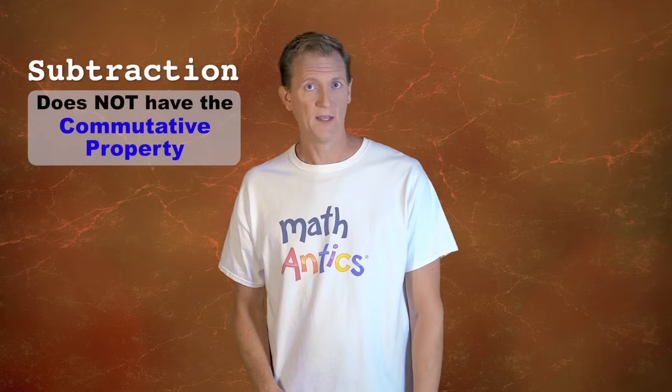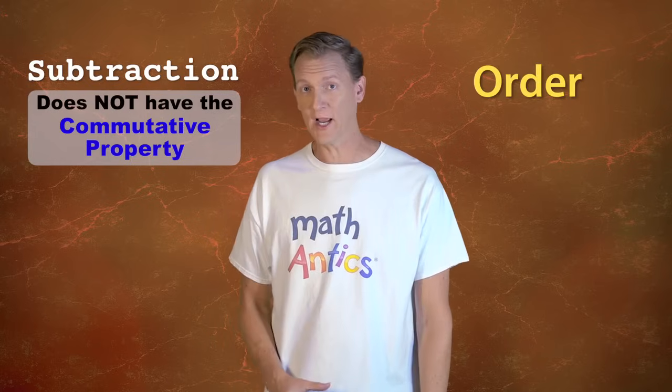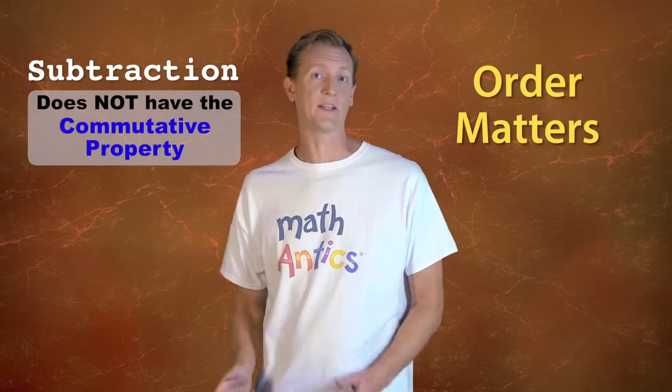Subtraction is always a little trickier than addition because subtraction does not have the commutative property. That means that the order of the numbers you're subtracting matters, and you can't switch it like you can with addition. Subtraction is also tricky because if you try subtracting a number from a smaller number, like 1 minus 5, you get a negative answer.